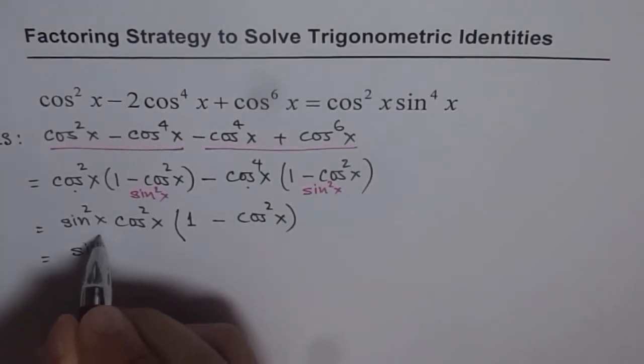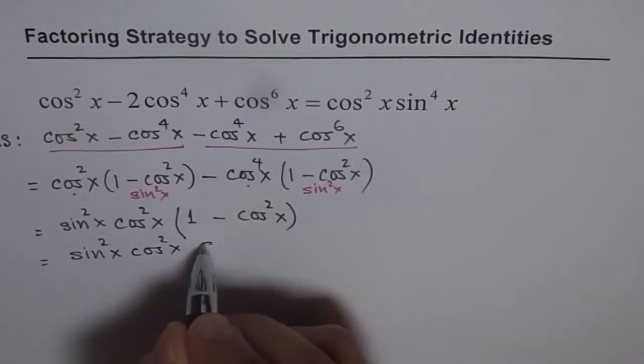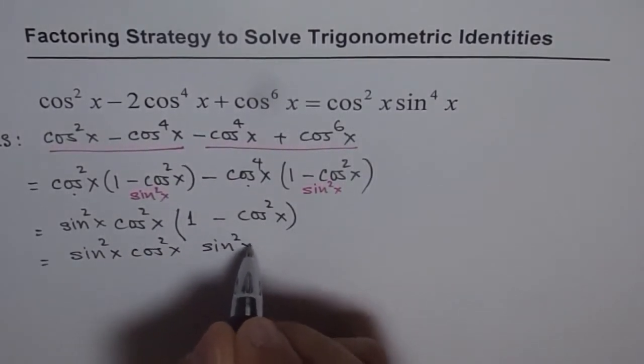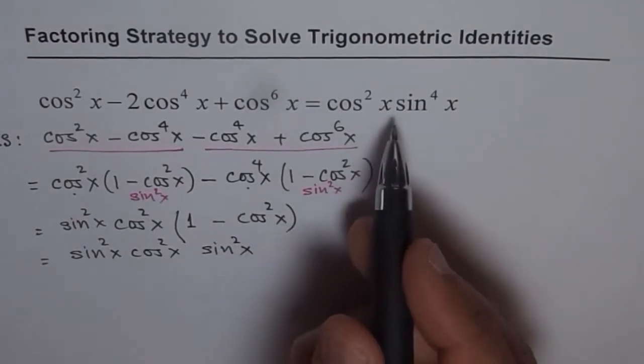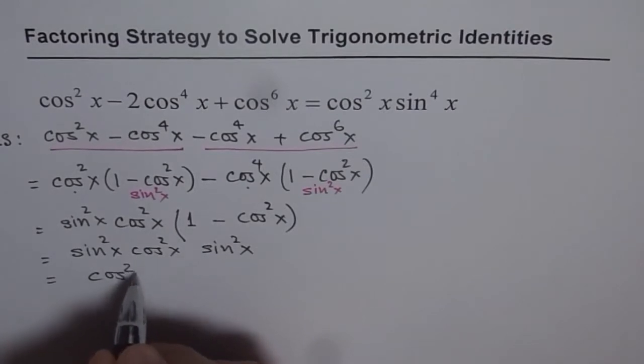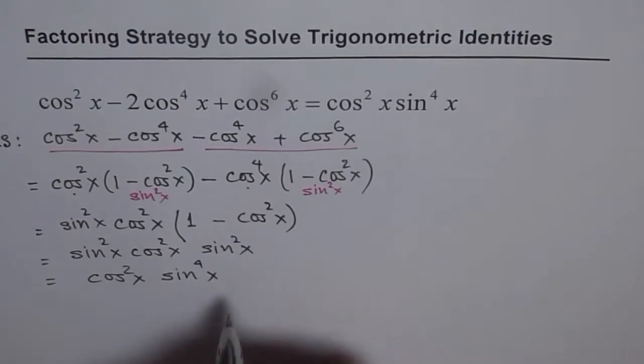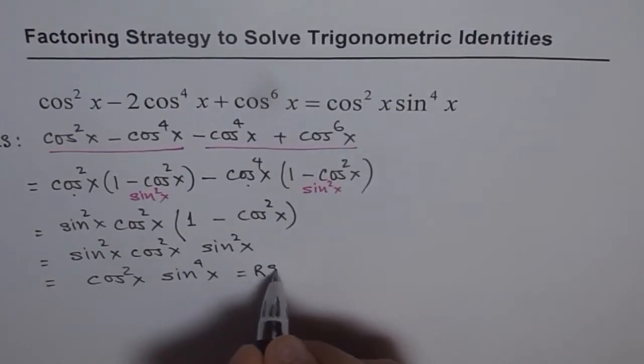So we can write this as sin²x times cos²x times sin²x. And see what we get—we get what we wanted. cos²x and sin²x times sin²x gives us sin⁴x. And that is the right side.